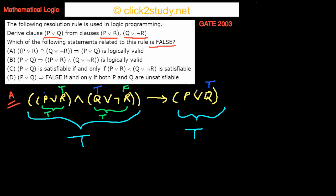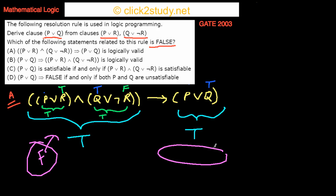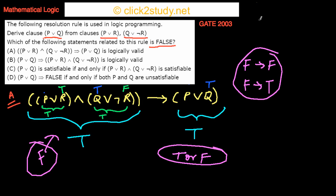If the left side of the implication is false, we don't need to check the right side — the implication is always true for false implies false and false implies true. The only problematic case is true implies false, which we've shown doesn't happen here. So option A is logically valid and not the false statement.